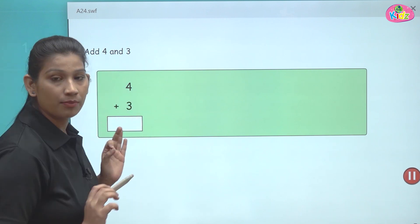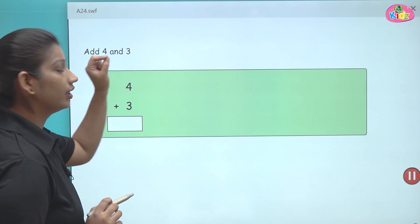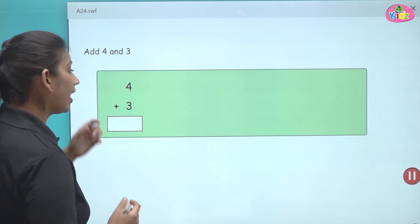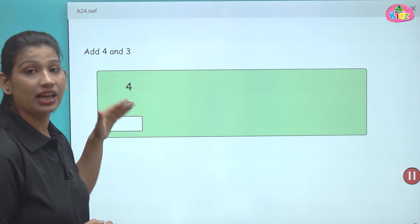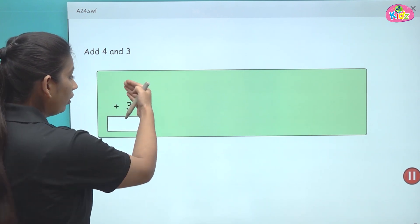First you will write the first number which is our number four. Then you will write the number three. The next number is number three. So you will write under it. Aap four ke neechay hi likhenge number three.